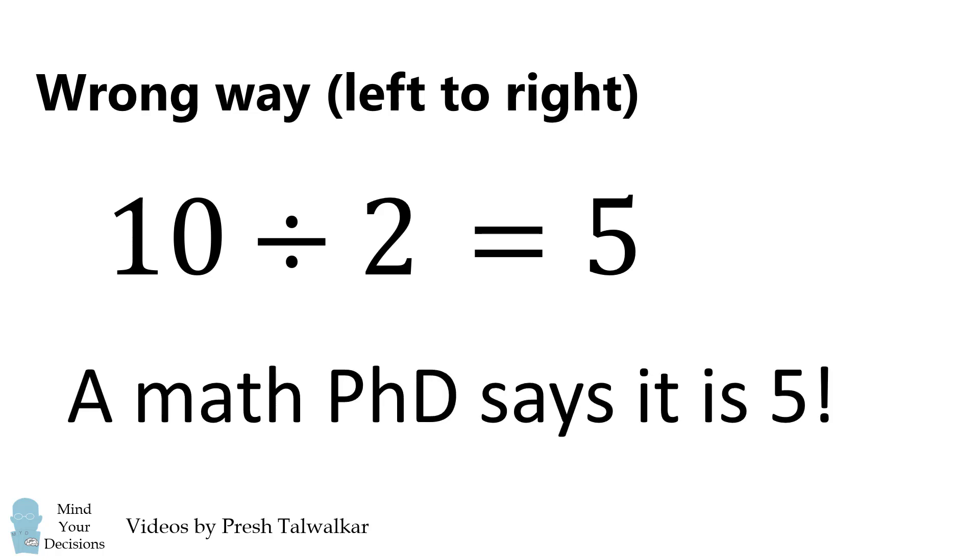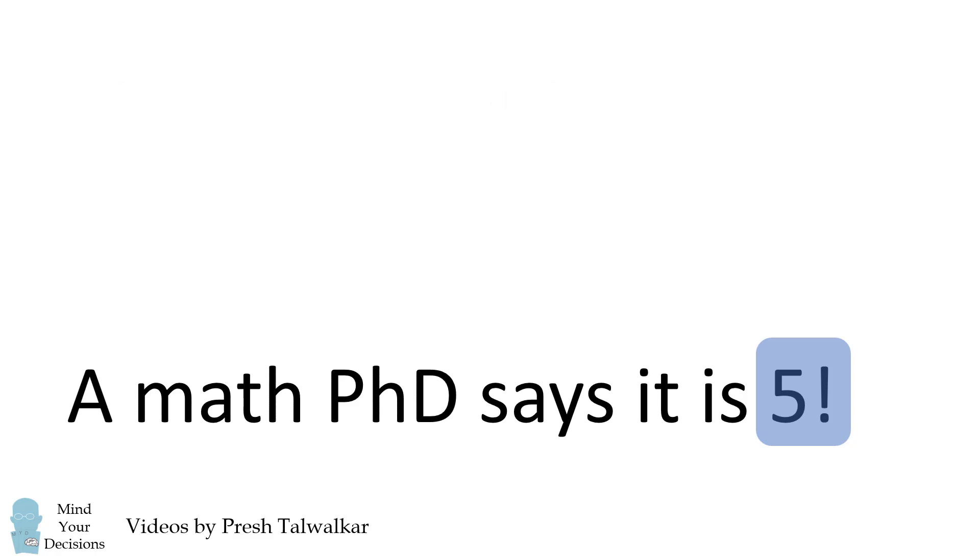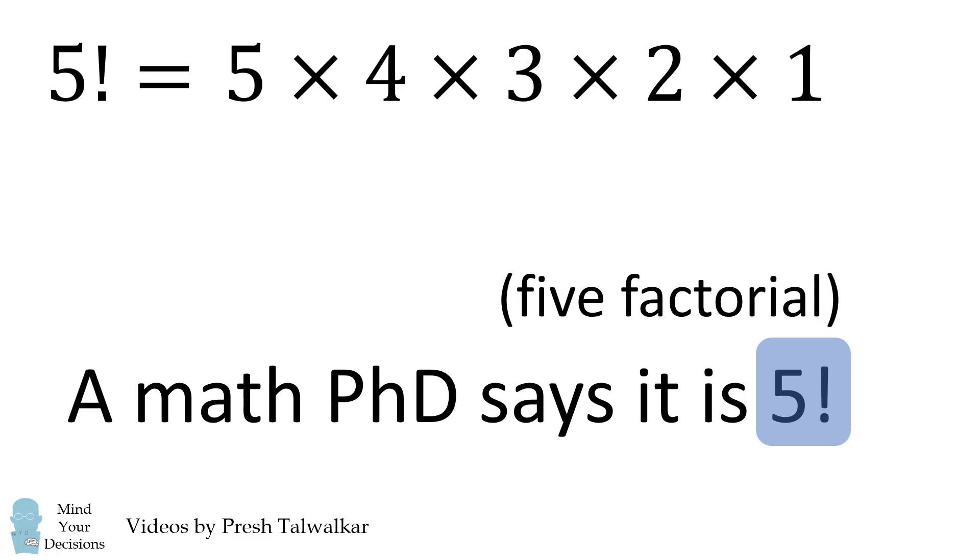So the confusion is why is the math PhD saying the answer is 5? Well, if you look closely, the math PhD is not saying the answer is 5. The math PhD is actually saying 5 exclamation point. This is a mathematical notation for factorial. 5 factorial is equal to 5 times 4 times 3 times 2 times 1 and that evaluates to be 120.